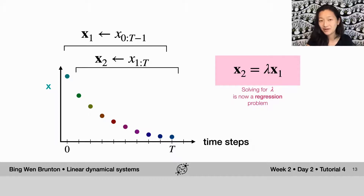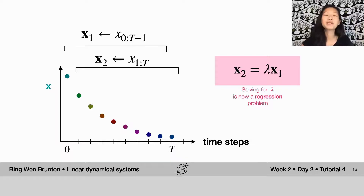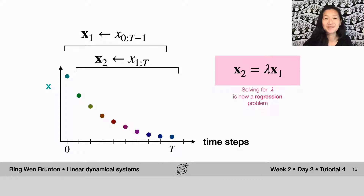Now that you understand how to set up one of these autoregression problems, let's do something fun. In particular, let's consider a problem with a dataset that is pretty different from what we've done for the rest of the tutorial.